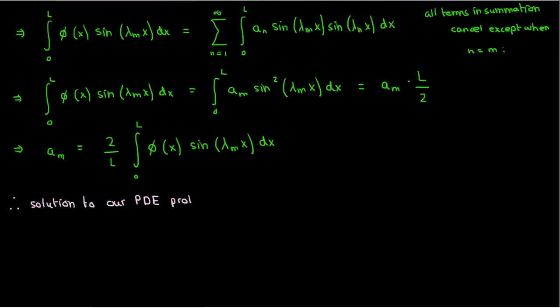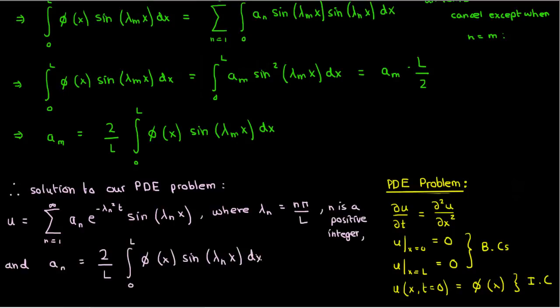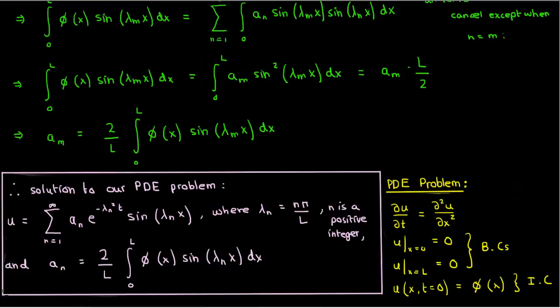So finally, finally we can write down the general solution to our PDE problem that we started working on in the previous lecture. And that does it. You have now solved a partial differential equation subject to its associated boundary and initial conditions using separation of variables. Congratulations!